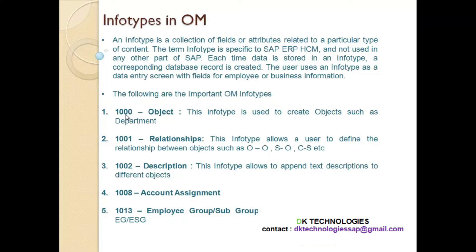The next info type, 1001, is 'Relationships'. As we covered in the previous lecture, relationships could be between org unit to org unit, position to org unit, or job and position, and so on. The next info type, 1002, is 'Description'. If you want to give some text or describe an org unit — for example, that this is the top org unit or some specific information about it — info type 1002 can be used for that purpose.